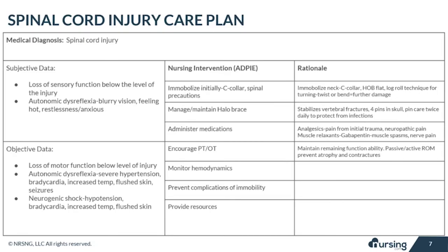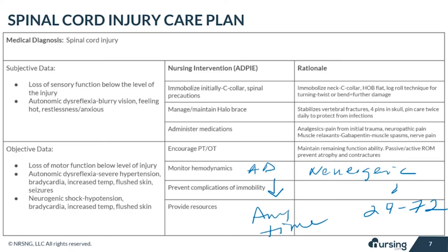Monitoring hemodynamics is important to recognize signs of autonomic dysreflexia or neurogenic shock. Neurogenic shock is a risk within the first 24 to 72 hours, but autonomic dysreflexia can occur at any time. Both complications show warm, flushed skin and an elevated temperature; however, neurogenic shock shows hypotension and bradycardia, while autonomic dysreflexia shows hypertension and bradycardia. We must also monitor and intervene to prevent complications of immobility, which can lead to pneumonia, DVT or thrombophlebitis, and pressure ulcers. Assess the skin with every turn — pressure ulcers can develop in as little as two hours.